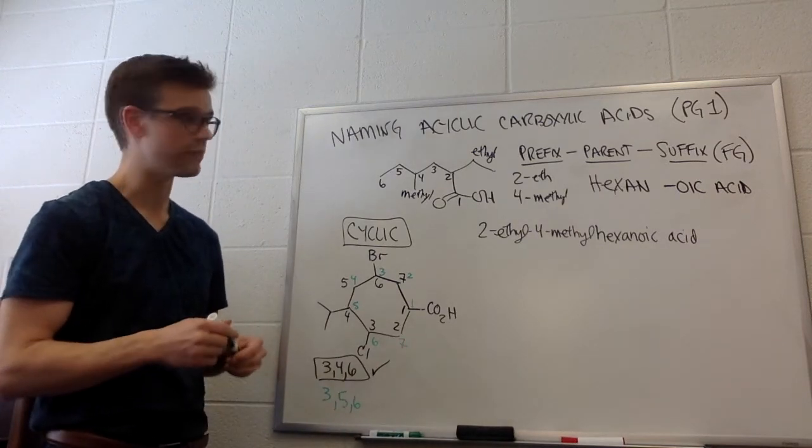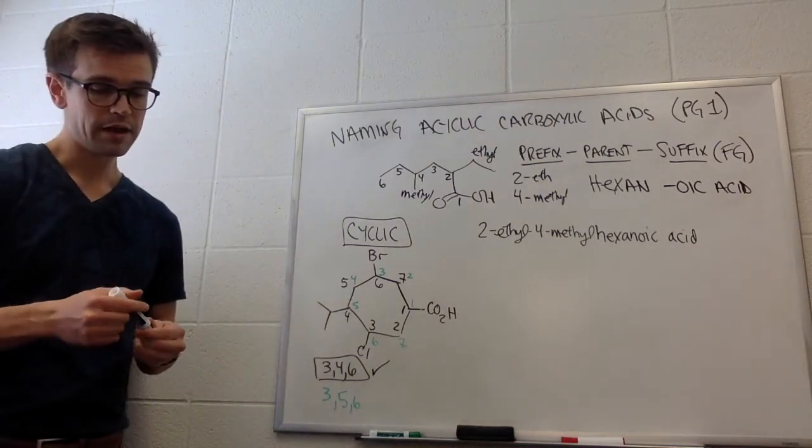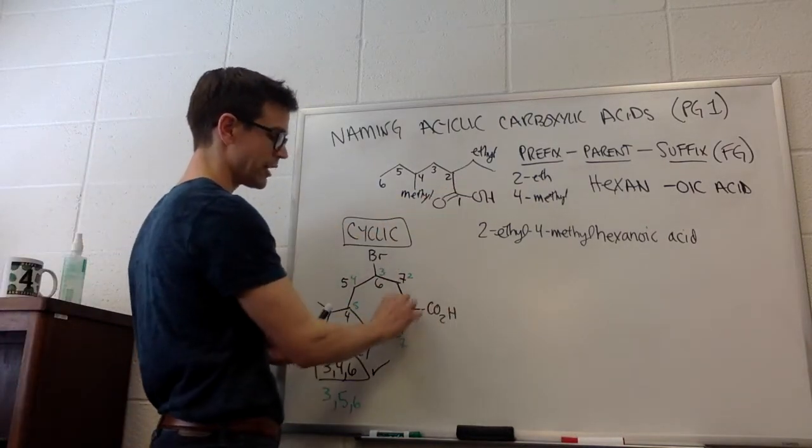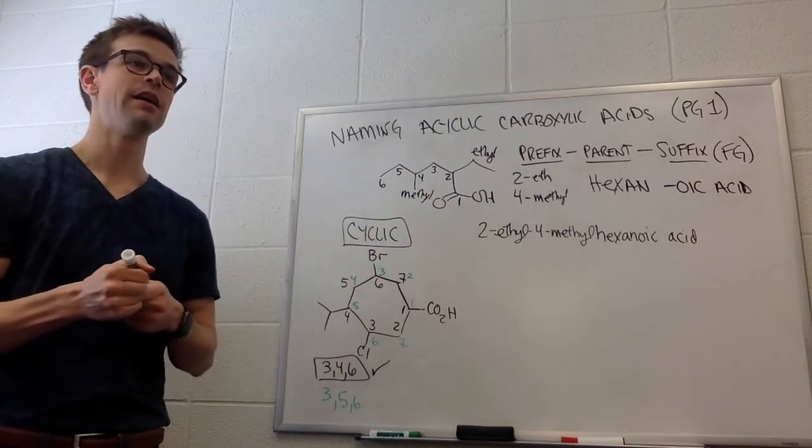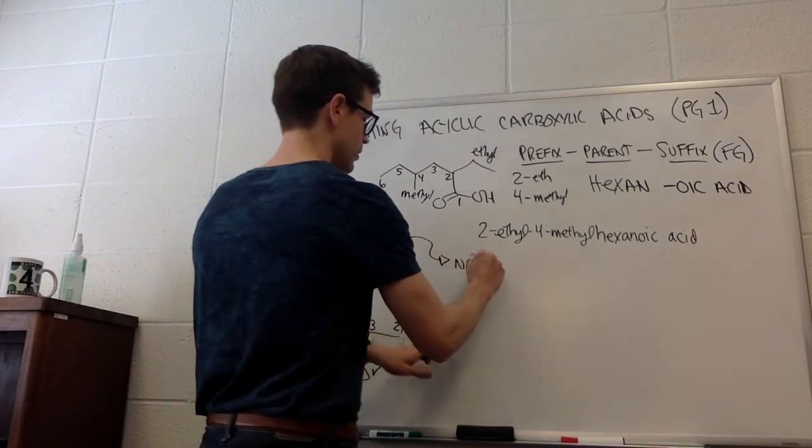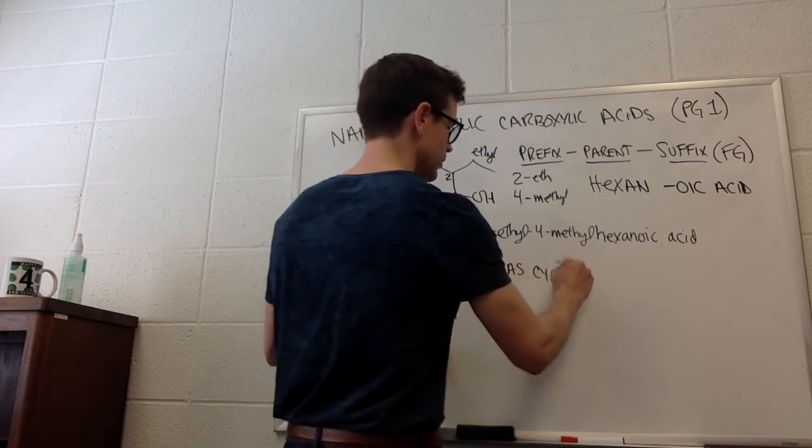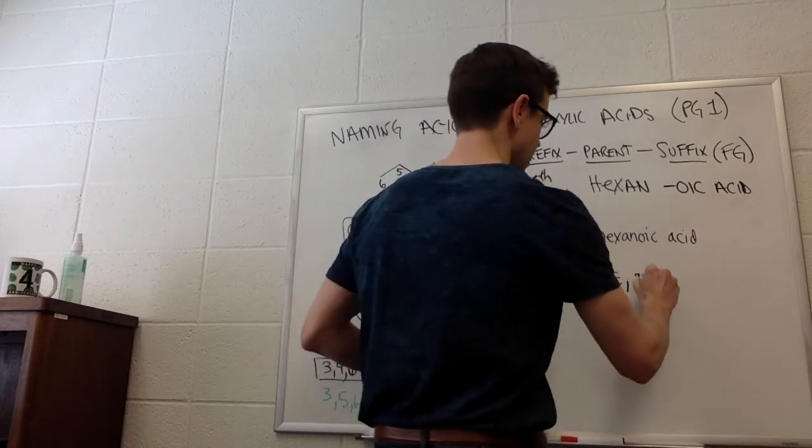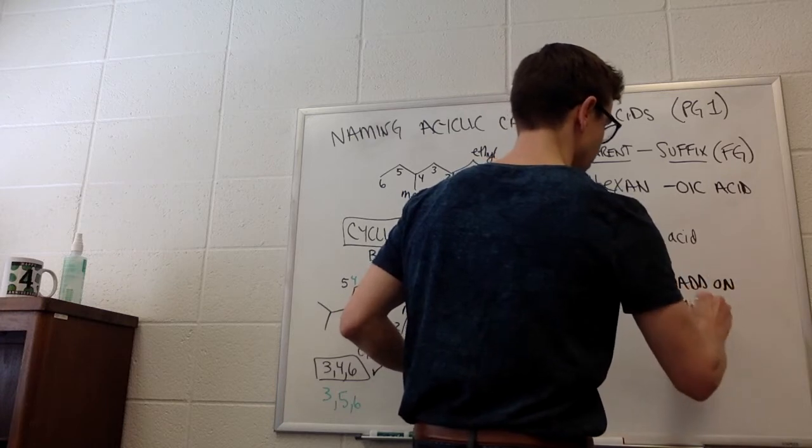So, what's the only difference here? The only difference here is with the suffix. Since the carboxylic acid isn't actually in the ring, it's outside of the ring, we add carboxylic acid as a suffix. So, cyclic, we name as a cycloalkane. Then, we add on carboxylic acid.